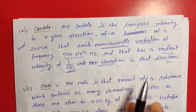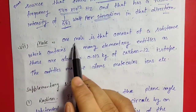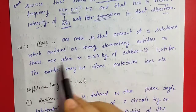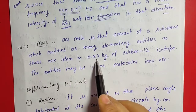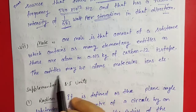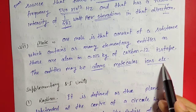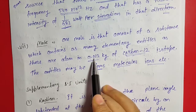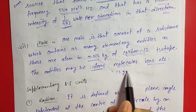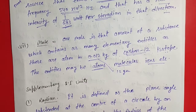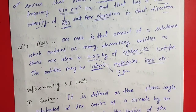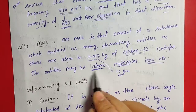Next, mole. One mole is that amount of substance which contains as many elementary entities as there are atoms in 0.012 kg of carbon-12 isotope. The entity may be atoms, molecules, or ions. That means 12 grams of carbon-12 isotope contains a certain number of atoms, molecules, or ions — that number is one mole.